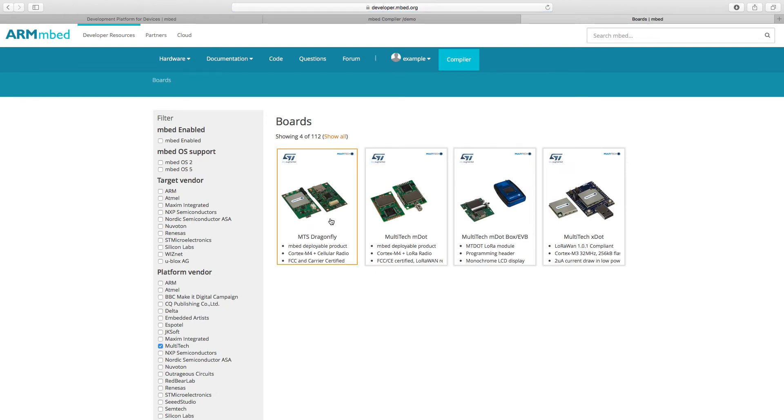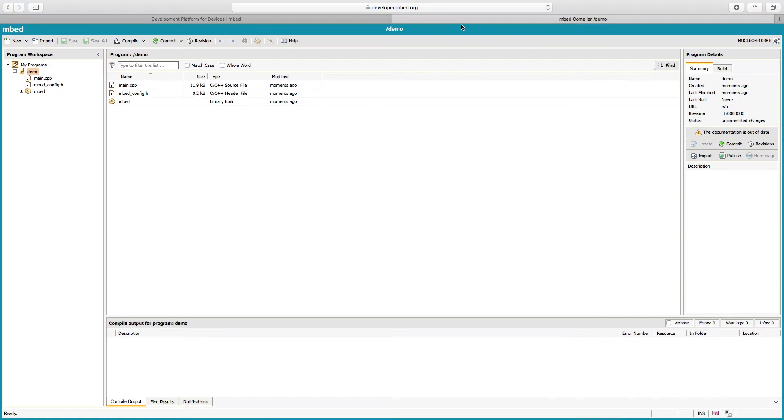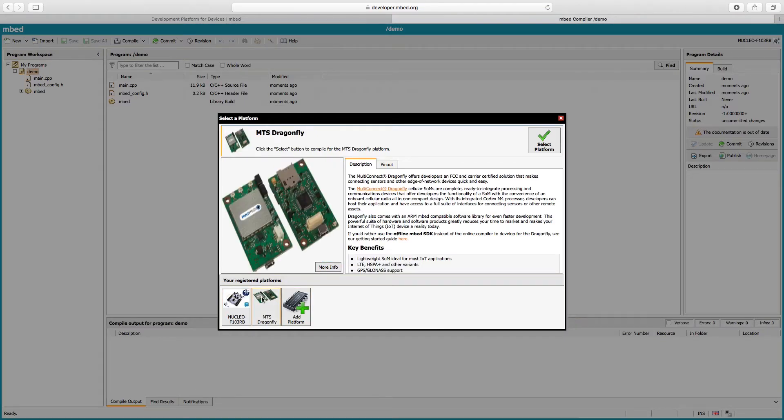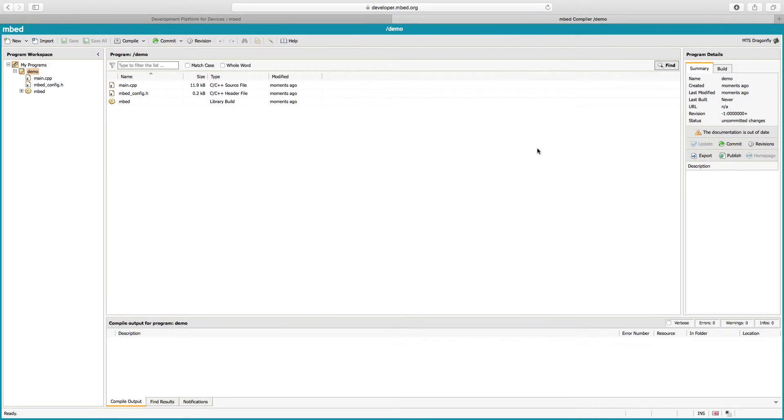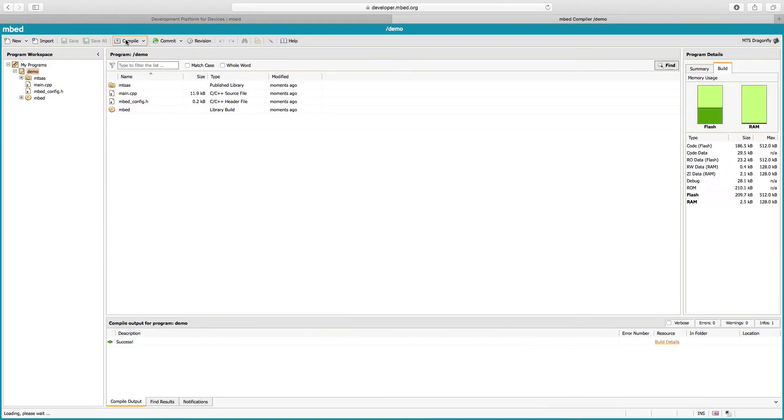Hit Compile, which will generate a file for download. The initial attempt will fail because the MTSAS library is missing. Push the Fix It button next to the error to prompt the embed compiler to automatically locate and import the correct library. The next time you hit Compile, it should succeed and will generate a file for download.